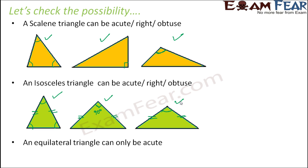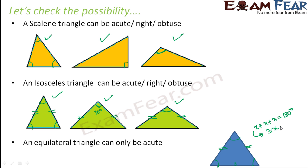When it comes to an equilateral triangle, it can only be acute. In an equilateral triangle, all three sides and all three angles must be equal. For all three angles to be equal, they must each be less than 90 degrees because their sum must be 180 degrees. If each angle is x, then x + x + x = 180 degrees, so 3x = 180 degrees, meaning x = 60 degrees. So each angle in an equilateral triangle is 60 degrees. A right angled equilateral triangle is not possible because one angle would need to be 90 degrees, and an obtuse angled equilateral triangle is also not possible. Only an acute equilateral triangle is possible.